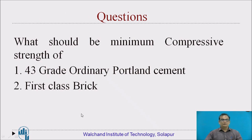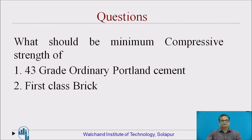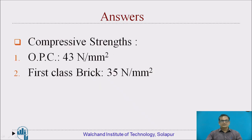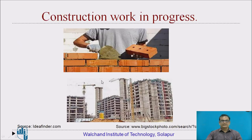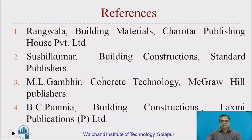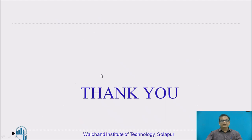Let us take a little pause here. Here are two questions — solve them: What should be the minimum compressive strength of 43-grade cement and first-class bricks? The answers are: OPC 43-grade cement — 43 N per mm²; first-class bricks — 35 N per mm². Here we can see construction work in progress. These are the references for today's session. Thank you.